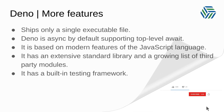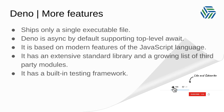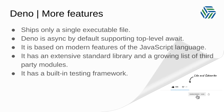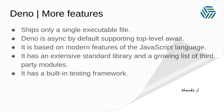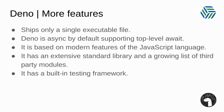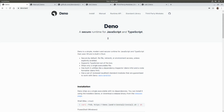Deno ships only a single executable file. Deno is async by default, supporting top-level await — we're going to see an example in the project we're going to create. Deno is based on modern features of the JavaScript language and has an extensive standard library and a growing list of third-party modules. Deno also has a built-in testing framework.